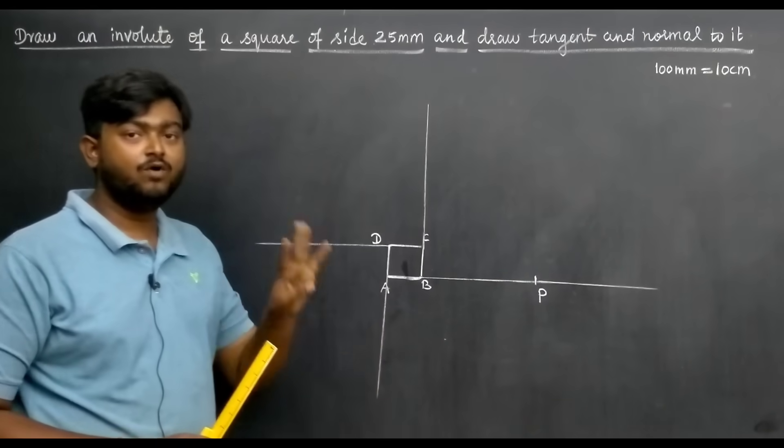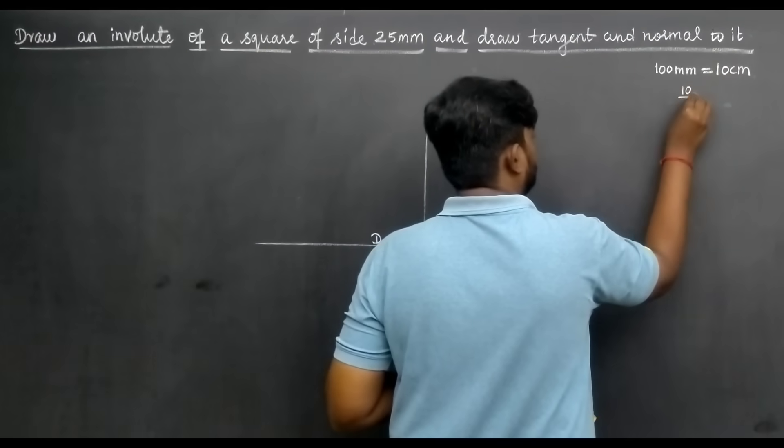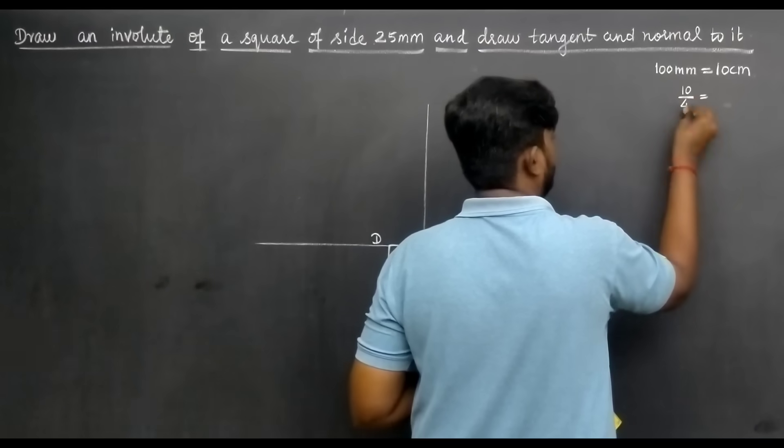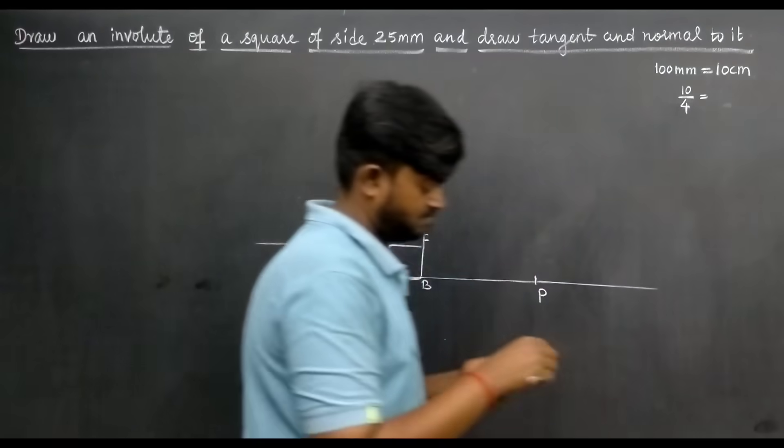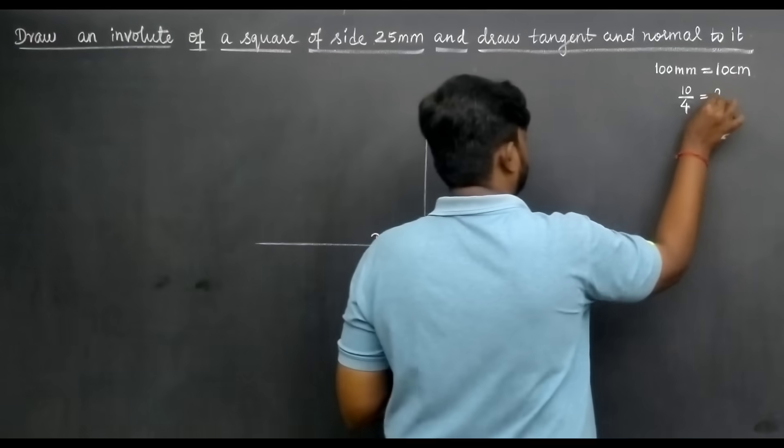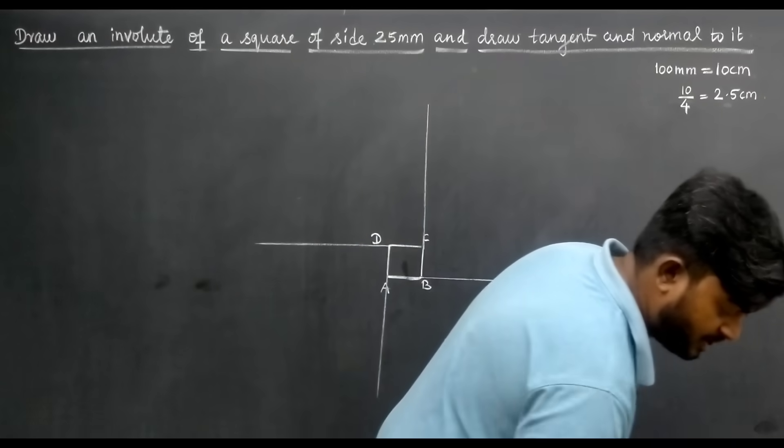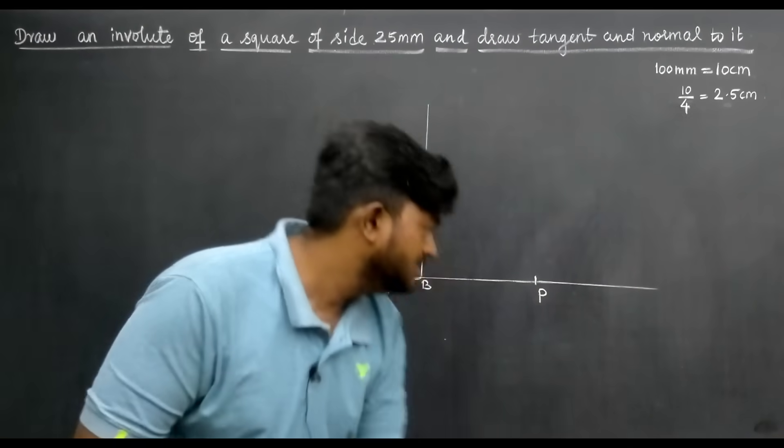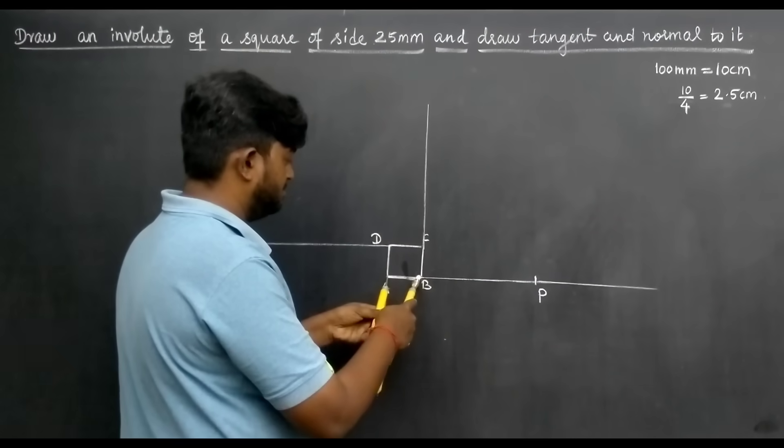Now we divide 10 centimeter into 4 parts. So 10 divided by 4 equals 2.5. Take the compass and set it to 2.5 cm. Then measure from the B-point.